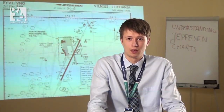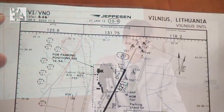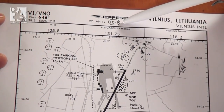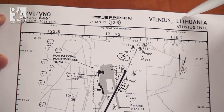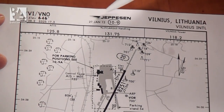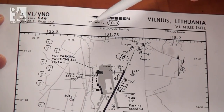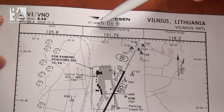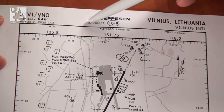Hello guys! Today I will show you how to understand the Jeppesen Airport chart. Here we have chart 10.9 for Vilnius International Airport in Lithuania, published on 2012 January 27th.